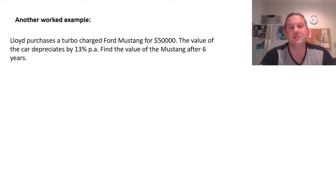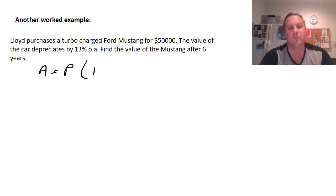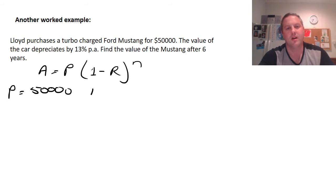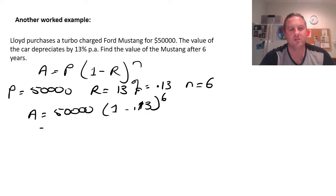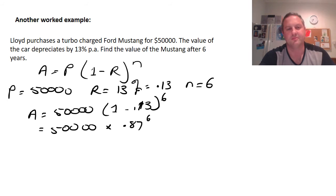Another worked example: Lloyd purchases a turbocharged Ford Mustang for $50,000. The value of the car depreciates by 13% per year. Find the value of the Mustang after six years. Using A = P(1 - r)^n: P = 50,000, r = 0.13, and n = 6. Substituting in: A = 50,000 × (1 - 0.13)^6 = 50,000 × (0.87)^6. Putting that into the calculator gives $21,681.31 — this is how much the Mustang will be worth after six years.